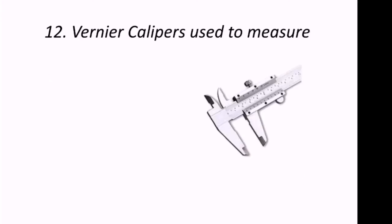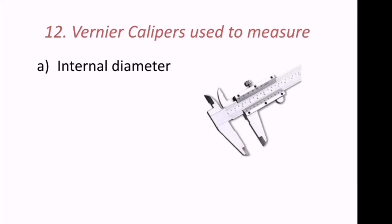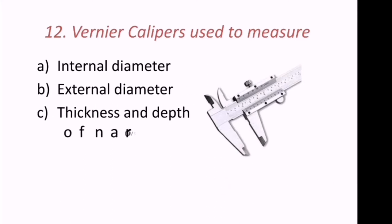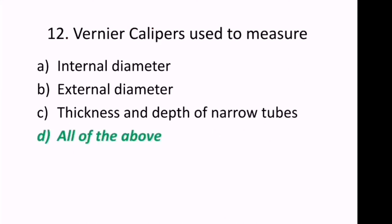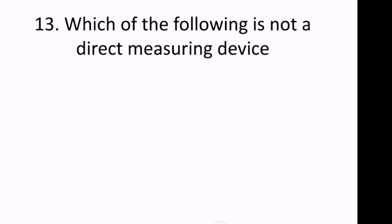Twelfth question: Vernier calipers are used to measure what? The options are internal diameter, external diameter, thickness and depth of narrow tubes, or all of the above. The correct answer is all of the above — vernier calipers are used to measure internal diameter, external diameter, and thickness and depth of narrow tubes. Hence the answer is D.